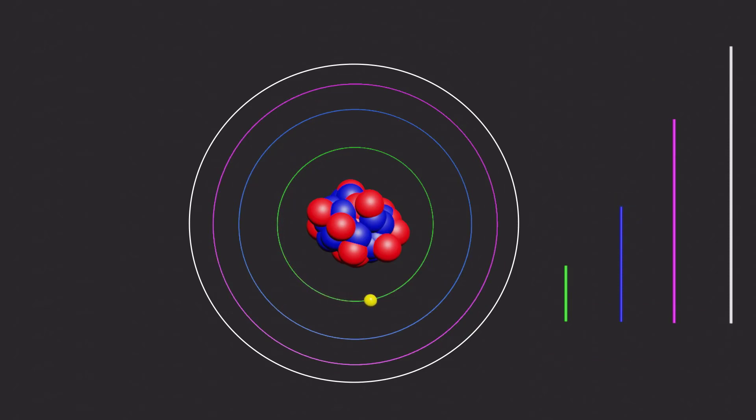The angular momentum of an electron in a quantized orbit is also quantized, given by L = nh/2π, where n is an integer representing the energy level, and h is Planck's constant.